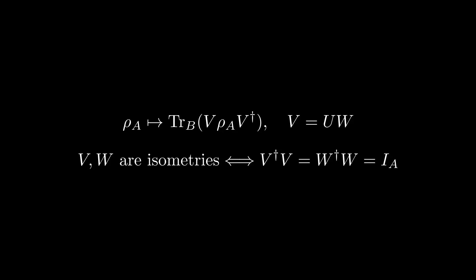An isometry is simply an operator that preserves the inner product, meaning that V dagger V equals the identity. And of course, since W is also an isometry, we have that W dagger W is also equal to the identity. Isometries are more general than unitaries since they aren't required to be square matrices, meaning that V V dagger is not equal to the identity in general, for instance.